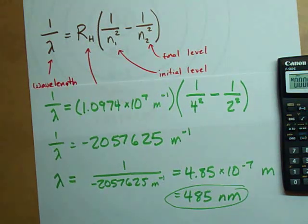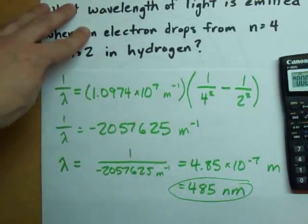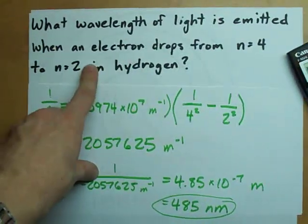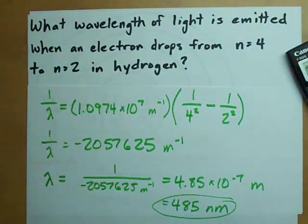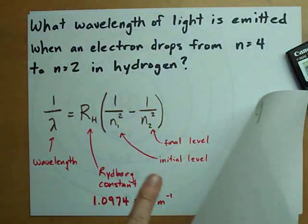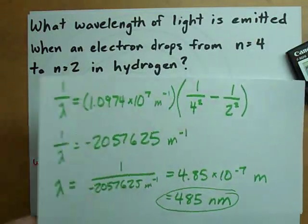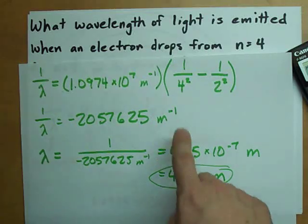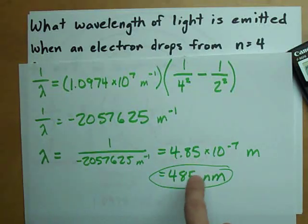In any case, the answer is that when an electron drops from n equals 4 to n equals 2 in hydrogen, you use the formula including the Rydberg constant and the two energy levels. And you end up with a wavelength.